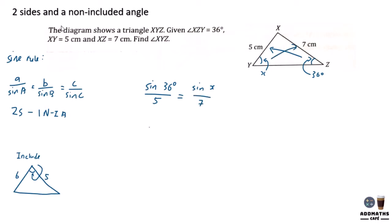So to find sine x, we have sine 36 degrees divided by 5 times 7 as we bring this division to that side.